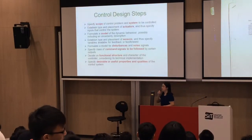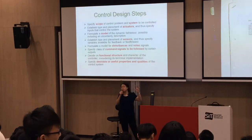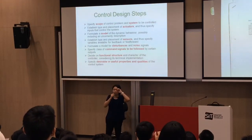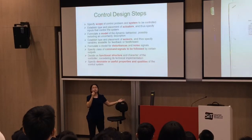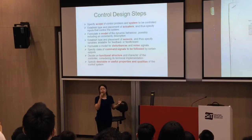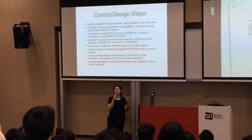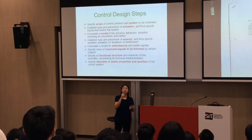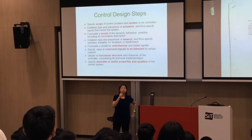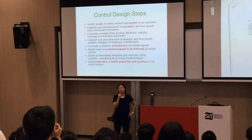So what do we do in control system design? There are several steps. First of all, if you're given a final project, you must first understand what the problem is trying to control. What's the system? What's the plan? What kind of sensors and actuators? Anything you put in the system? What's the model? The dynamic behaviour? What are the possible disturbances and noises?